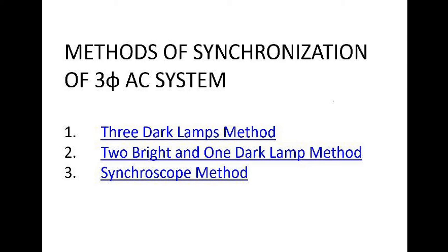The three methods are: first, the dark lamp method; second, the two bright one dark lamp method; and third, the synchroscope method. The first two — the three dark lamp method and the two bright one dark lamp method — are generally used in college labs, while the synchroscope method is generally practiced by operators in control rooms.